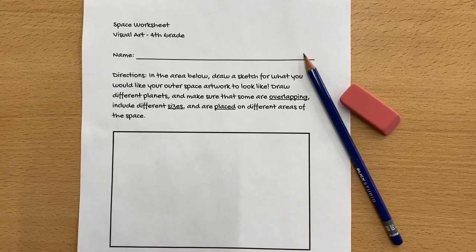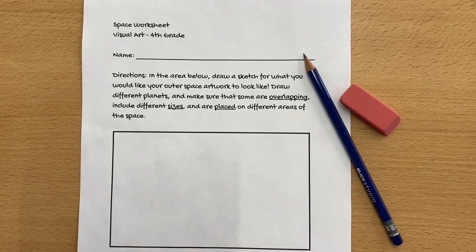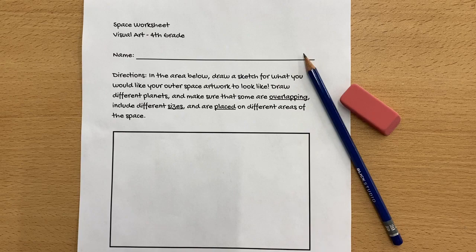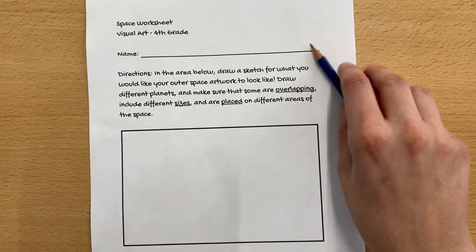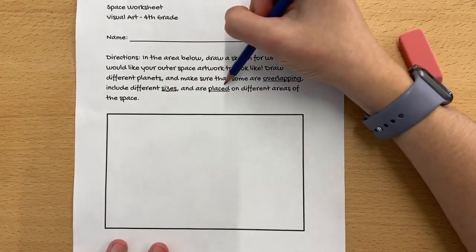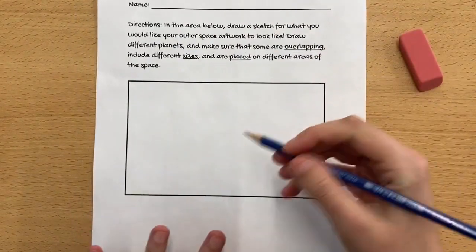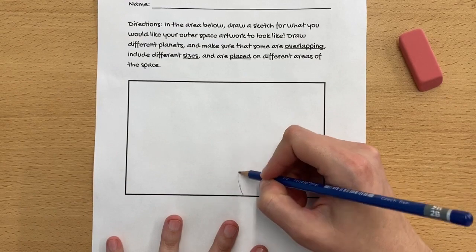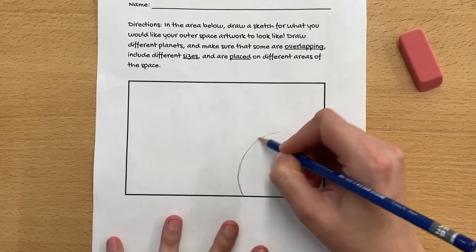We are, of course, because we're using the element of space, going to make a sketch of outer space, kind of like the one we just looked at. So I'm going to do a quick sketch making sure that I include overlapping, size, and placement. I'm going to make sure that I have one nice big planet.